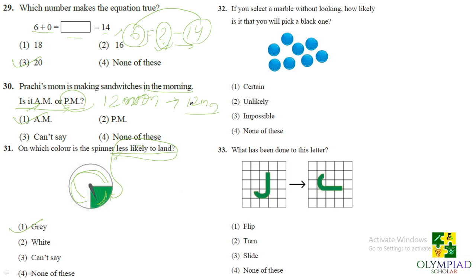So let's move on to the next question. If you select a marble without looking how likely is that you pick a black one? See it doesn't matter whether you look at the marbles or don't look but you cannot pick a black one because all the marbles are like blue in color. So it is impossible to pick a black from this group.